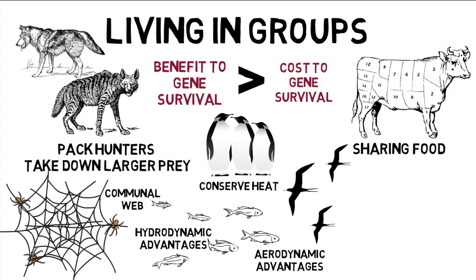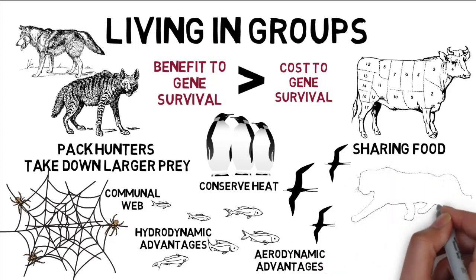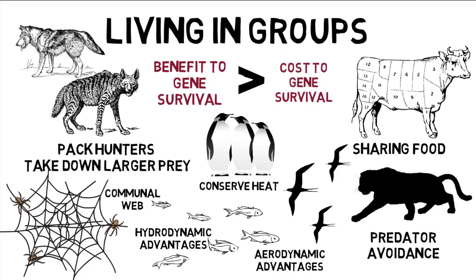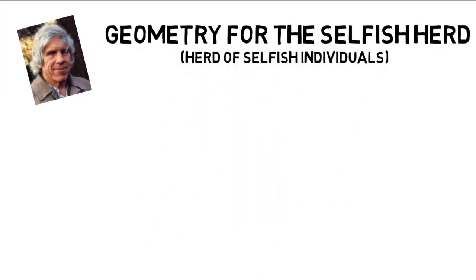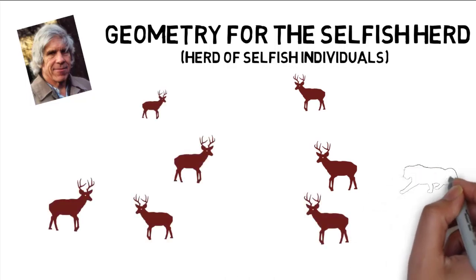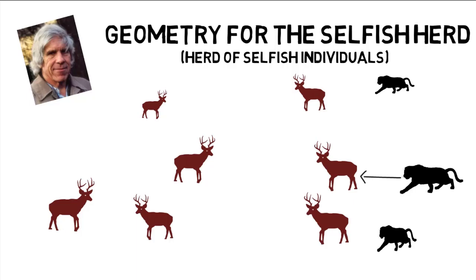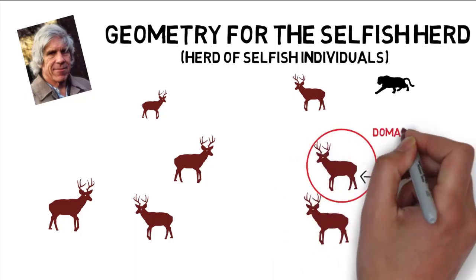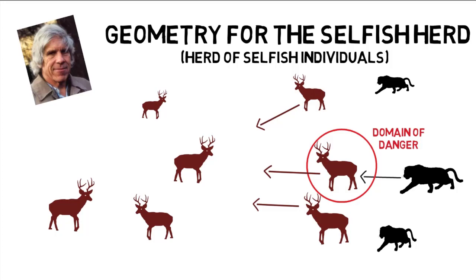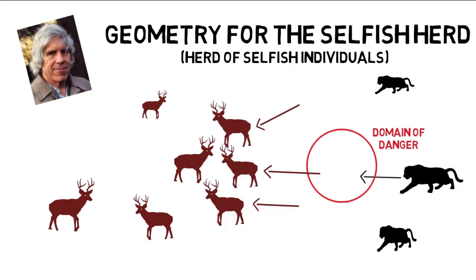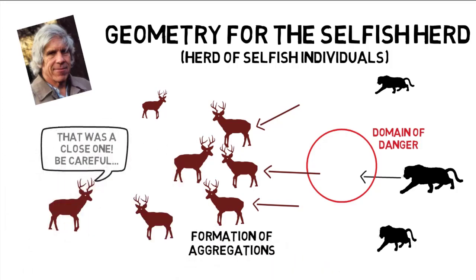The most obvious advantage of group living is predator avoidance. In W.D. Hamilton's paper 'Geometry for the Selfish Herd' — by which he meant a herd of selfish individuals — he proposes a simple model of why animals stay in groups. Assuming predators always attack the nearest prey, animals at the edge of the herd have the highest domain of danger and will try to move toward the center, the safer spot. This constant migration toward the center results in the formation of aggregations or groups.